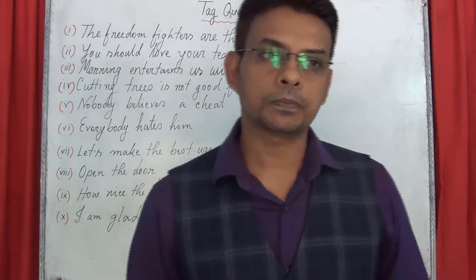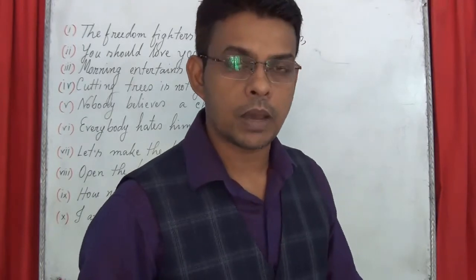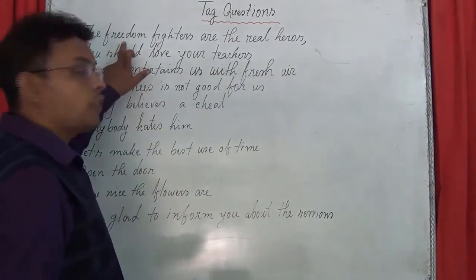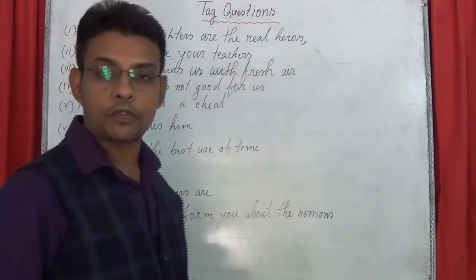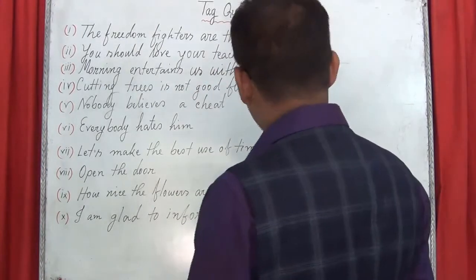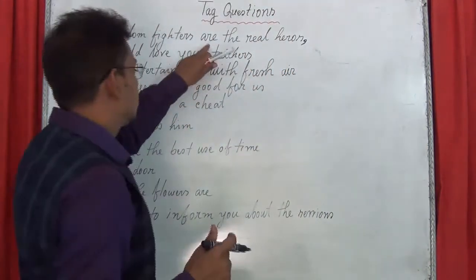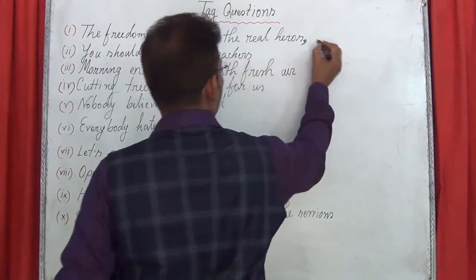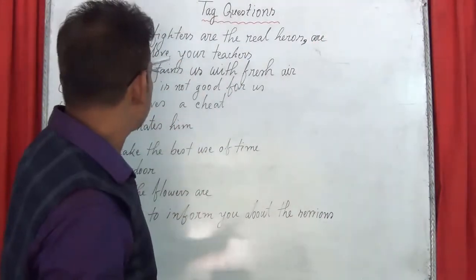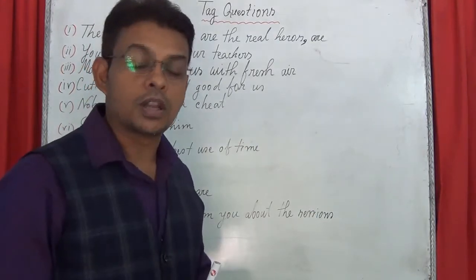It is easy. How do you make a tag question? First, you have to think about the statement. Look at this first statement: 'The freedom fighters are the real heroes.' You can see the parts. First, you have to use a comma, then you have to use an auxiliary verb form. Then you have to observe: if you think the sentence is negative, use the positive form. If the sentence is affirmative, use the negative form.